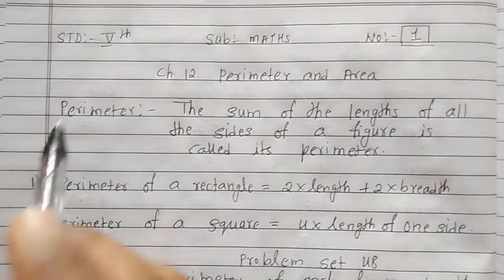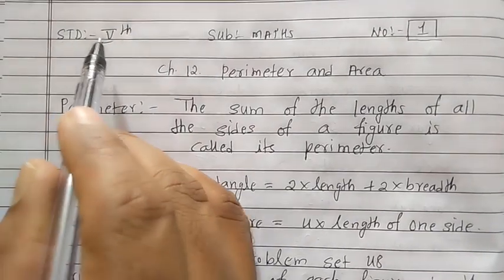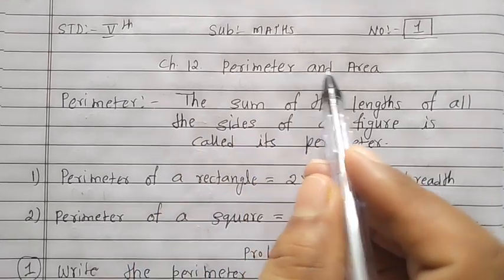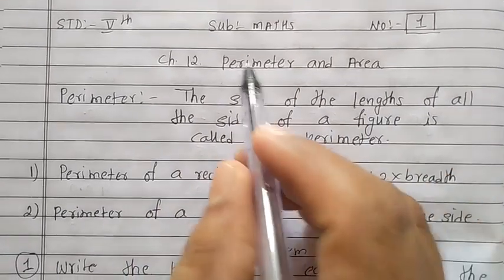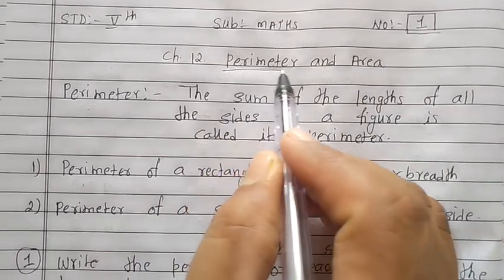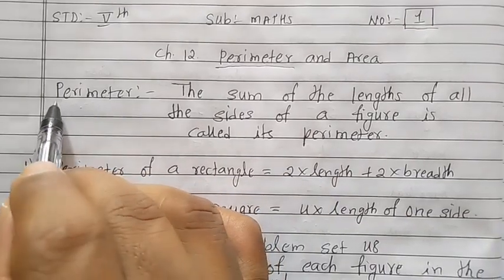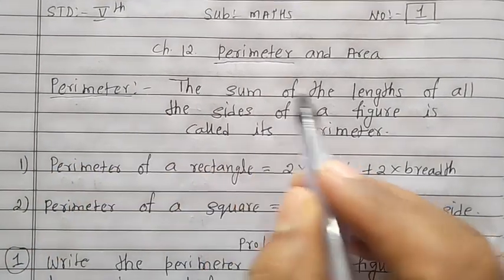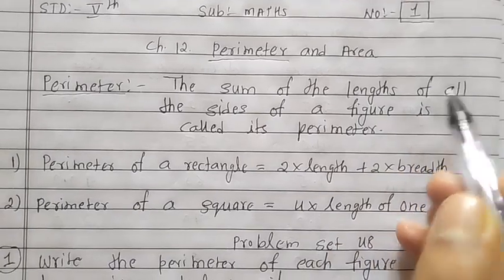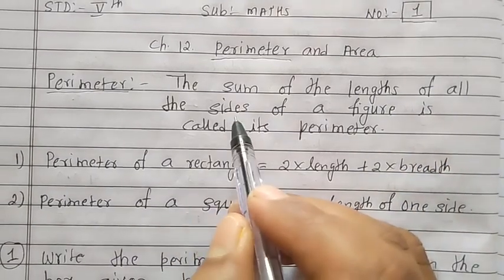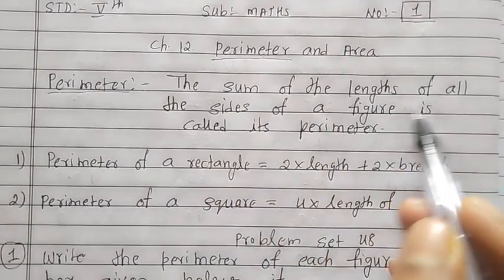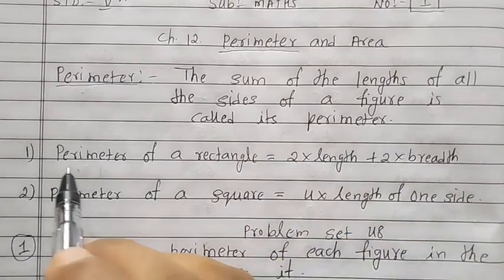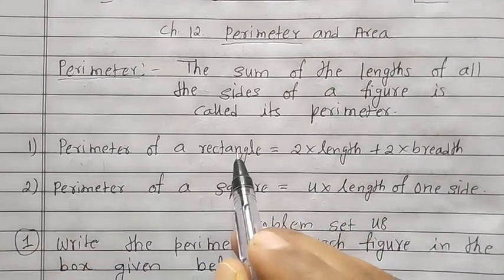Today we are going to learn Standard 5 Maths Chapter 12: Perimeter and Area. Let's discuss about the perimeter. What is the meaning of perimeter? Perimeter means the sum of the lengths of all the sides of a figure.